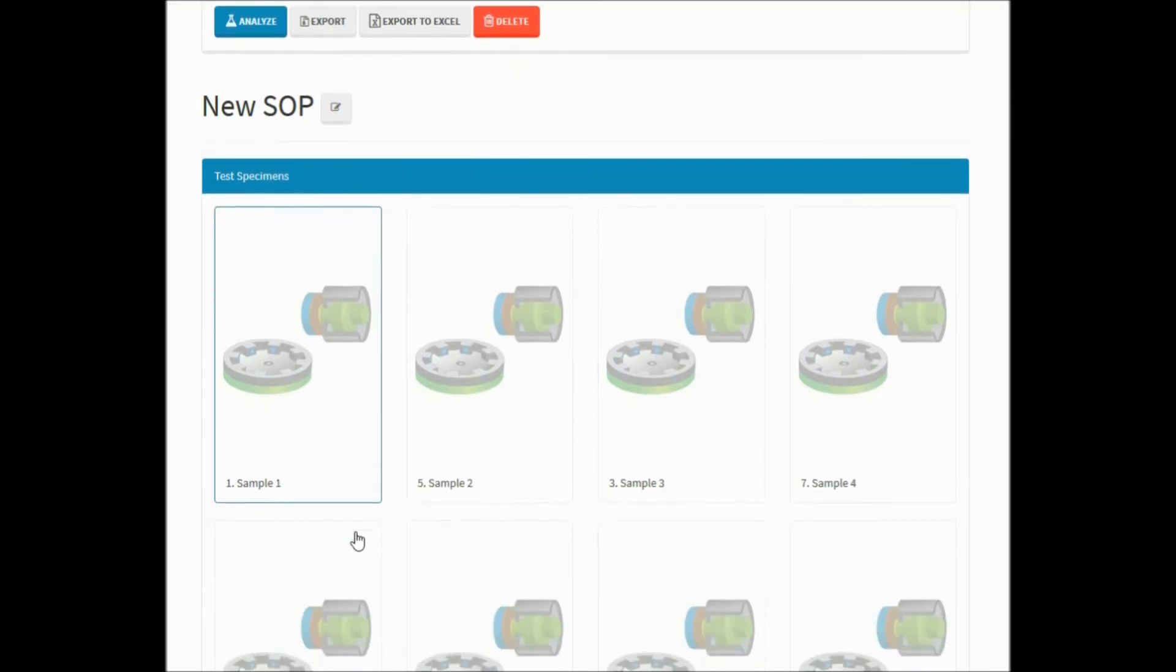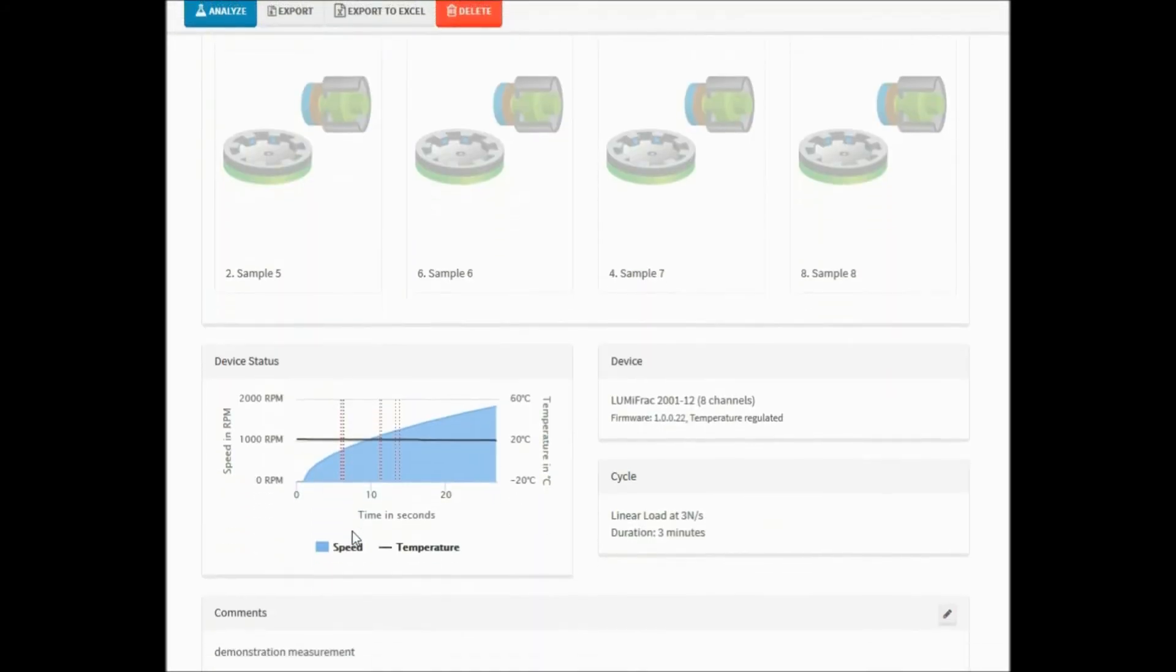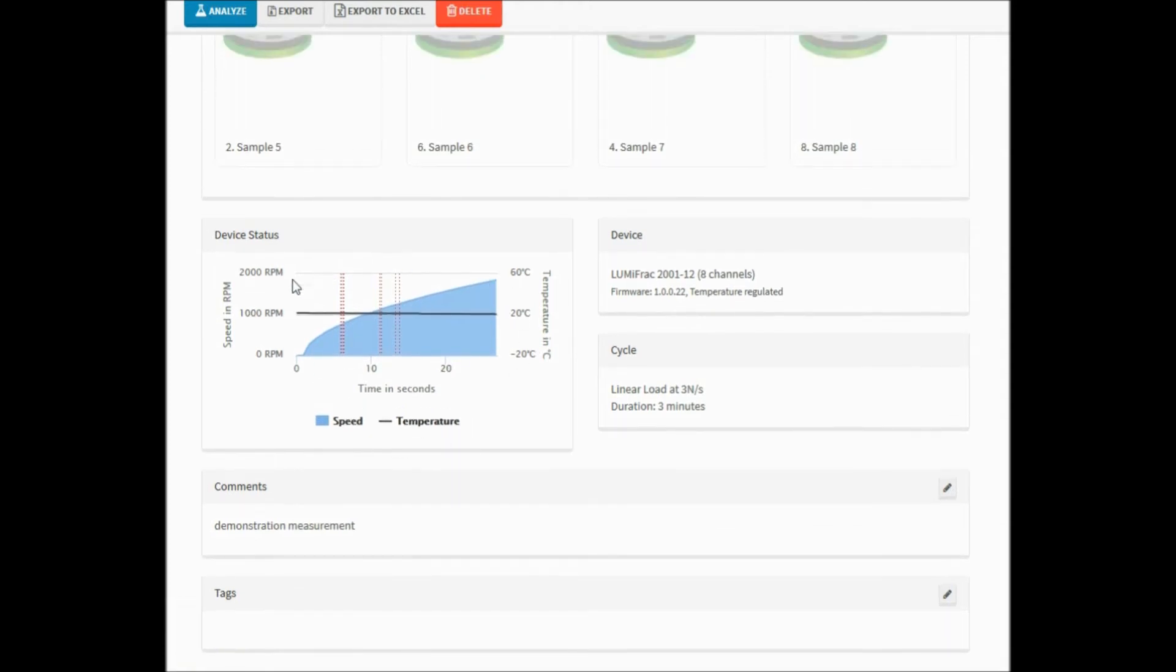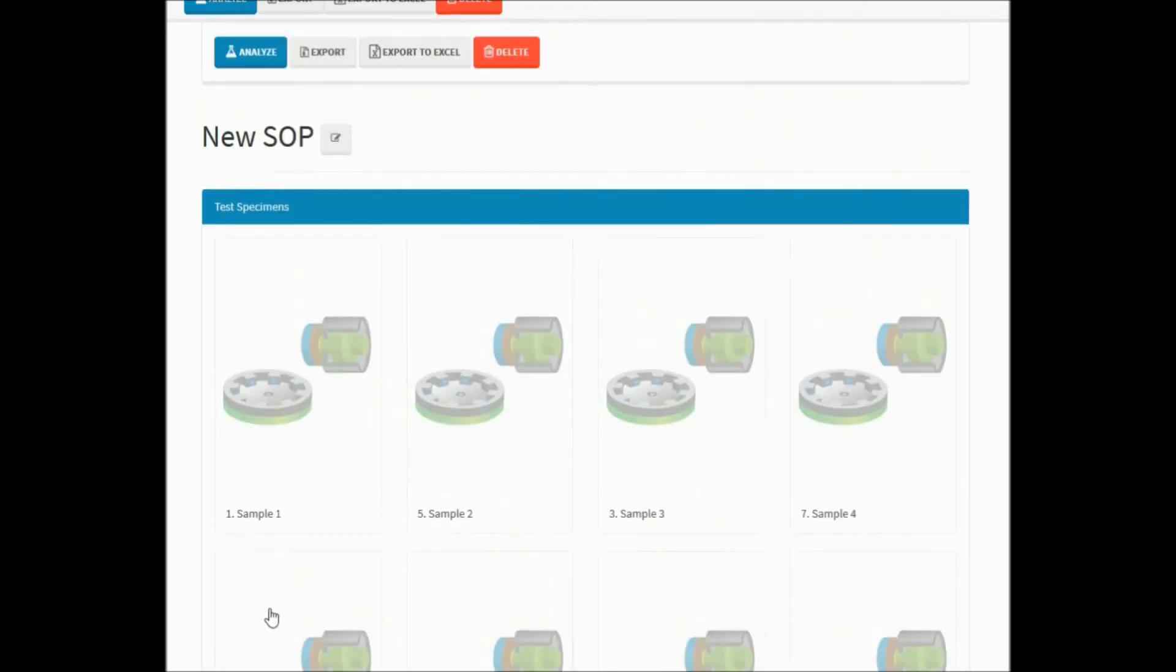Here you see a detailed display of all your measurement details. Samples can be individually specified by uploading fracture images and by adding additional information, for example, used adhesive, coating, substrate material or comments regarding the fracture behavior. The device status, the speed and temperature settings, the duration, all are saved here for a convenient evaluation. You can also tag with keywords that can be easily searched and found later in your database.